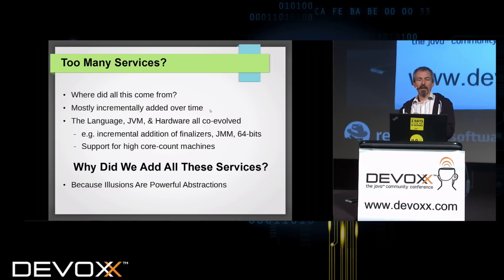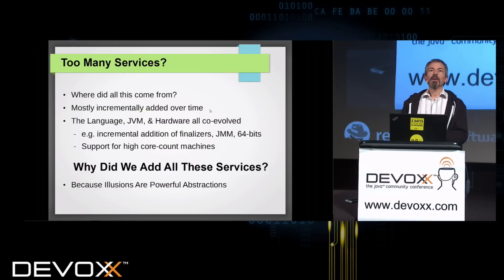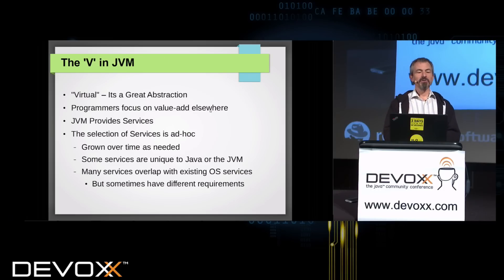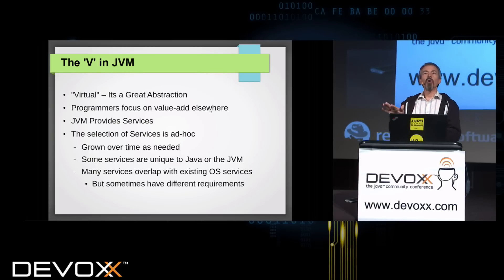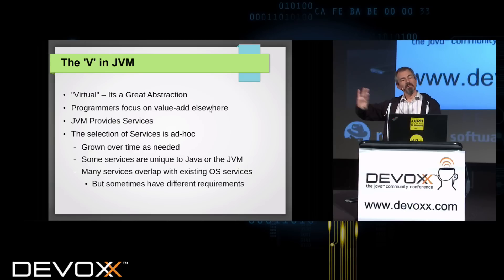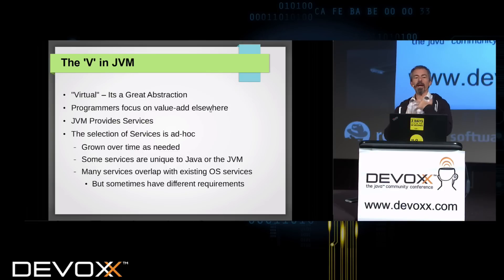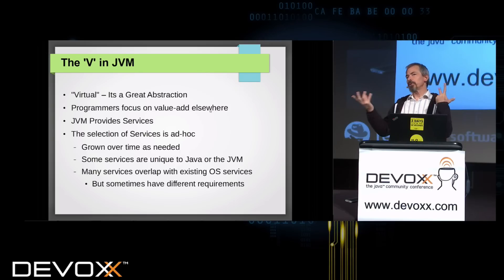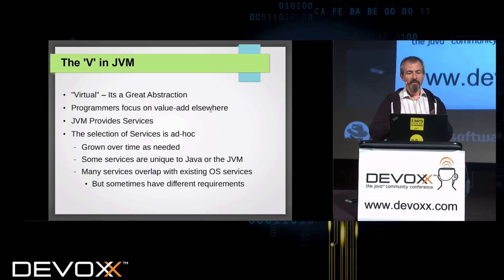The language, the JVM, and the hardware have all co-evolved together. 64-bit math didn't start when Java started because you didn't have 64-bit processors. Support for high-core count machines wasn't there in the beginning because you didn't have them. These services provide an illusion — a powerful abstraction. It's the V in virtual machine. You can think about solving other problems and know that this illusion covers up all kinds of complexity elsewhere. It's a separation of concerns: JVM does this problem, you solve that problem. Many services overlap with existing OS services but have different requirements that don't exactly match.